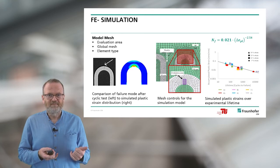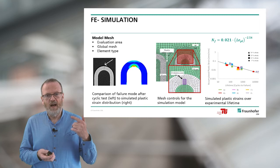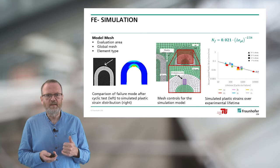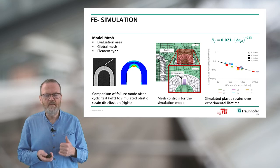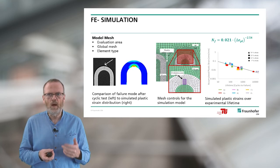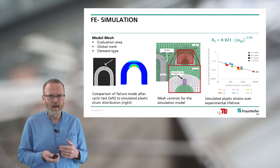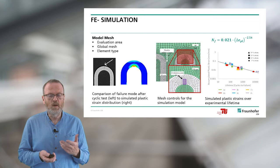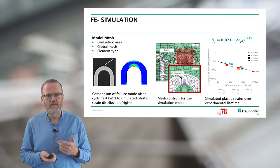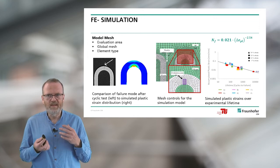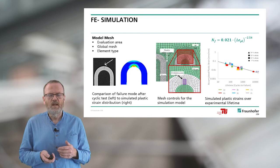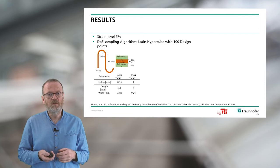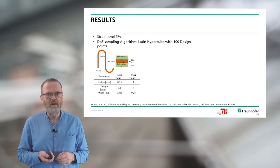We have materials data, we have calculated the plastic strain, and we have measured the critical value of numbers to failure. Now we can determine the parameters C1 and C2 — for example, C1 = 0.21 and C2 = 254. With this data, we can analyze the critical value using the simulation tools for variations of the meander structure.